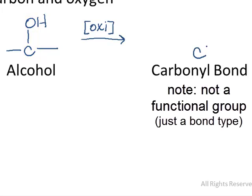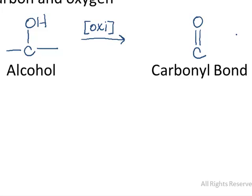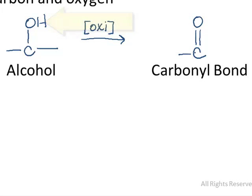A carbonyl bond is a carbon-to-oxygen double bond, which means, in the case of an alcohol oxidation, that we've removed the hydrogen that was connected to the oxygen. Whatever was connected to the carbon, whether they were R groups or hydrogen, will generally remain, although we'll look at specific instances in a moment.